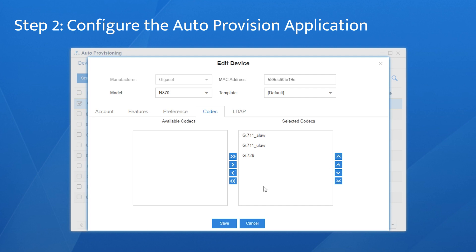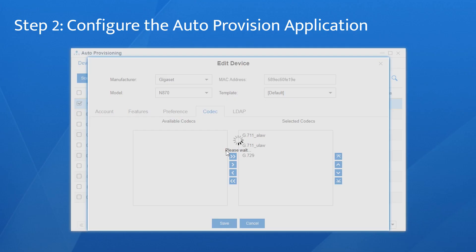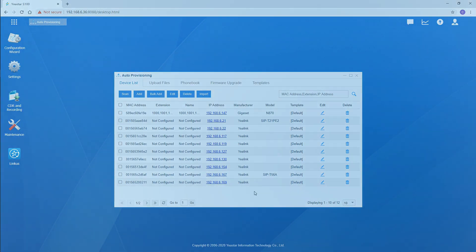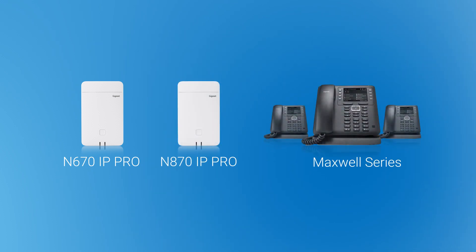Once finished, click on Save. A window pops up — click Yes to confirm the configurations. That was all the configuration on our PBX side. By the way, except for the Gigaset N670 IP Pro and N870 IP Pro, the Maxwell series is also compatible with Yeastar on-premise PBX.